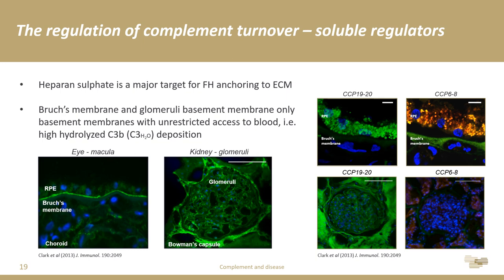The two anchoring domains in factor H seem to confer different specificities for different heparan sulfate sulfation sequences. The anchoring domain in CCP 7 predominantly anchors factor H to Bruch's membrane in the eye, whereas the 19–20 region has more influence in the kidney — almost the other way around. Genetic variants within CCPs 19–20 predominantly affect kidney disease, whereas mutations and genetic variants within the CCP 6–8 region predominantly affect diseases of the outer blood-retinal barrier.